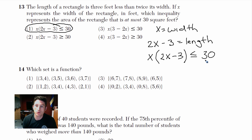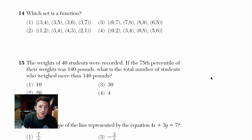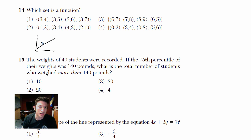Now, which one is a function? This is fairly easy to explain. Functions have to pass the vertical line test. If I draw a vertical line here it passes, and here it passes. But what happens if I draw it here on this set?